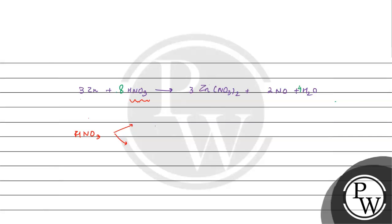HNO3 plays two roles here: one role is as an oxidizing agent — oxidizing agent means it oxidizes something — and the other role is as an acid. So when we talk about equivalent weight as an acid, what happens?